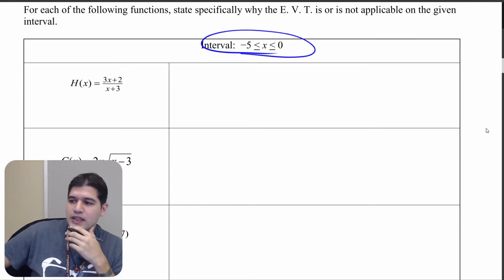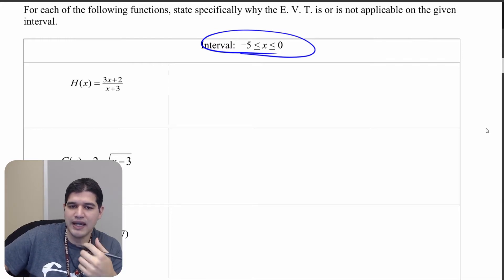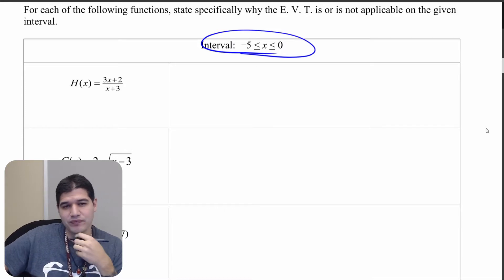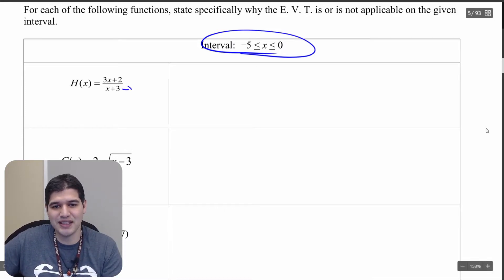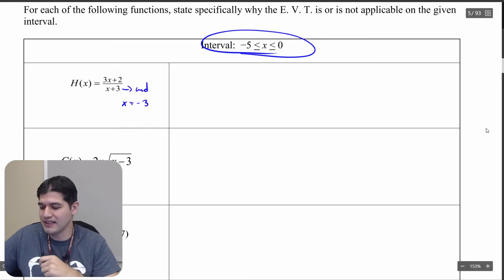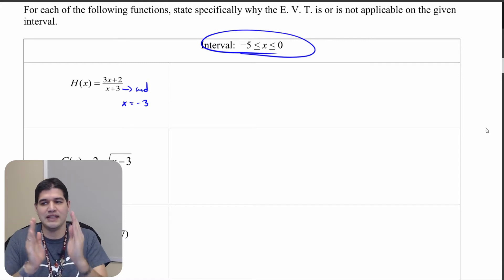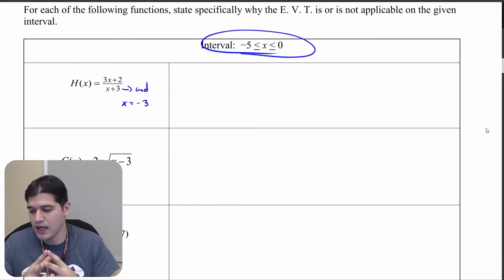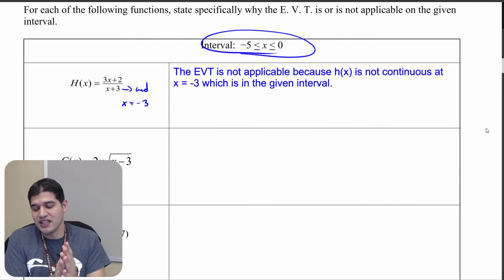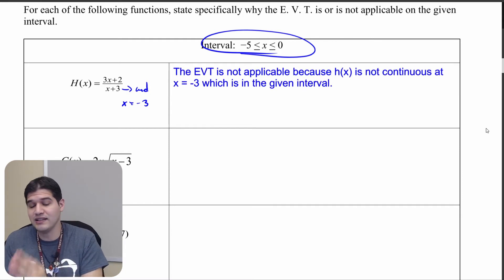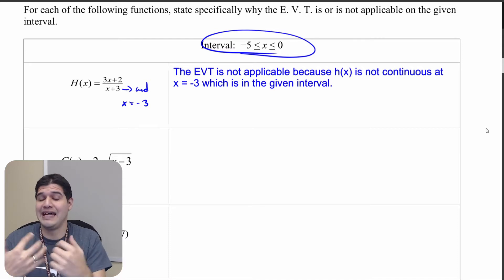So on this first one, for h we're given (3x+2)/(x+3). What I want to note is that this is actually going to be undefined when x equals negative 3 because then you're going to have division by zero. Negative 3 exists in between negative 5 and 0 on our interval, so the extreme value theorem is not applicable because h of x is not continuous at x equals negative 3, which is in that interval.